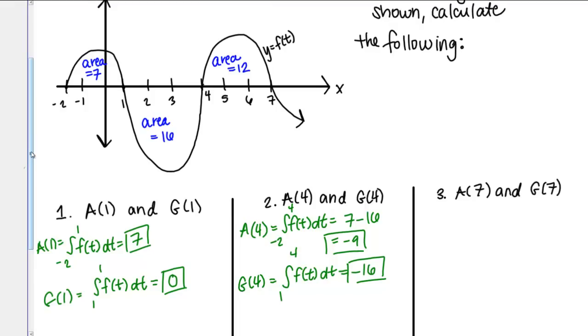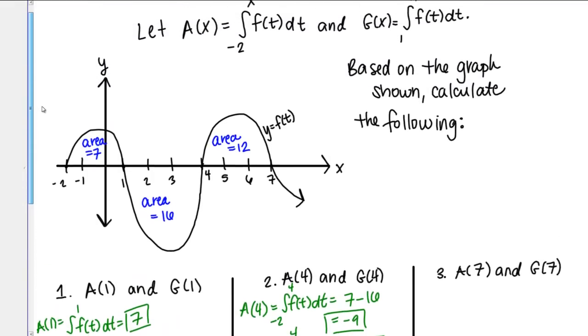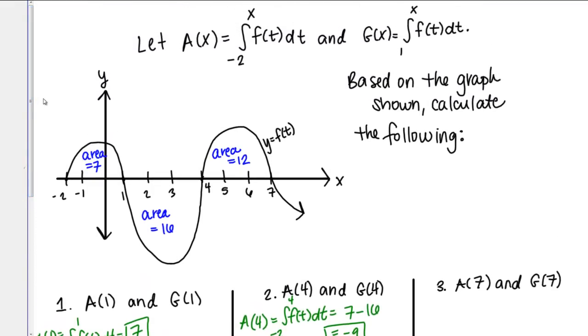Finally, we want to calculate A of 7 and G of 7. Once again, A of 7 means I'm plugging in 7 to A of X, and that means that I'm going to have the integral from negative 2 to 7 of F of T DT.